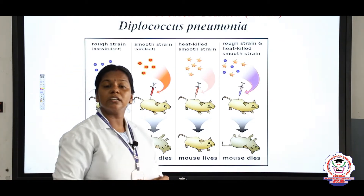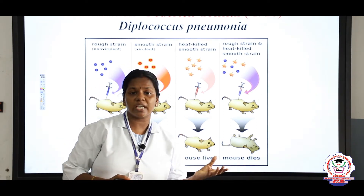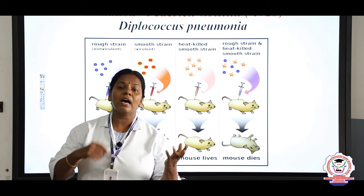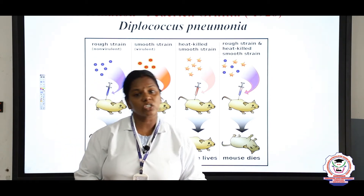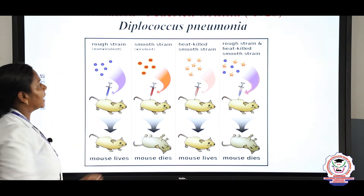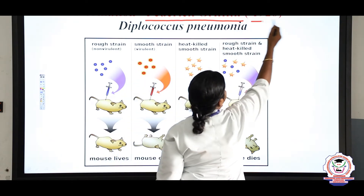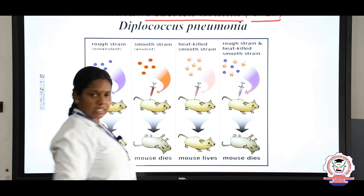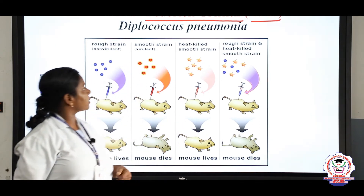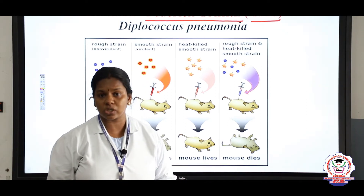The next method of sexual reproduction is transformation. Transformation means the transfer of genetic material from one organism to another. The transformation experiment was proved by Frederick Griffith in the year 1928. It is an important experiment in biotechnology.